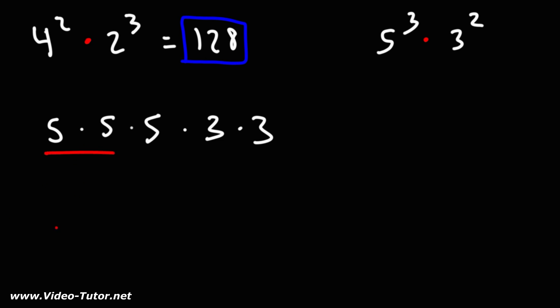Now, 5 times 5, that's 25. And 3 times 3, that's 9. 25 times 5 is 125.